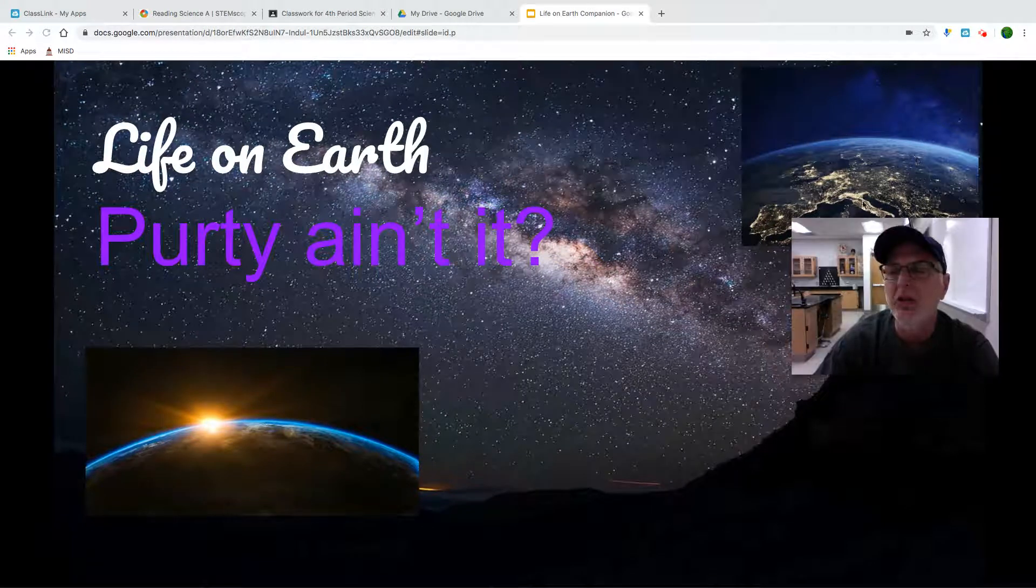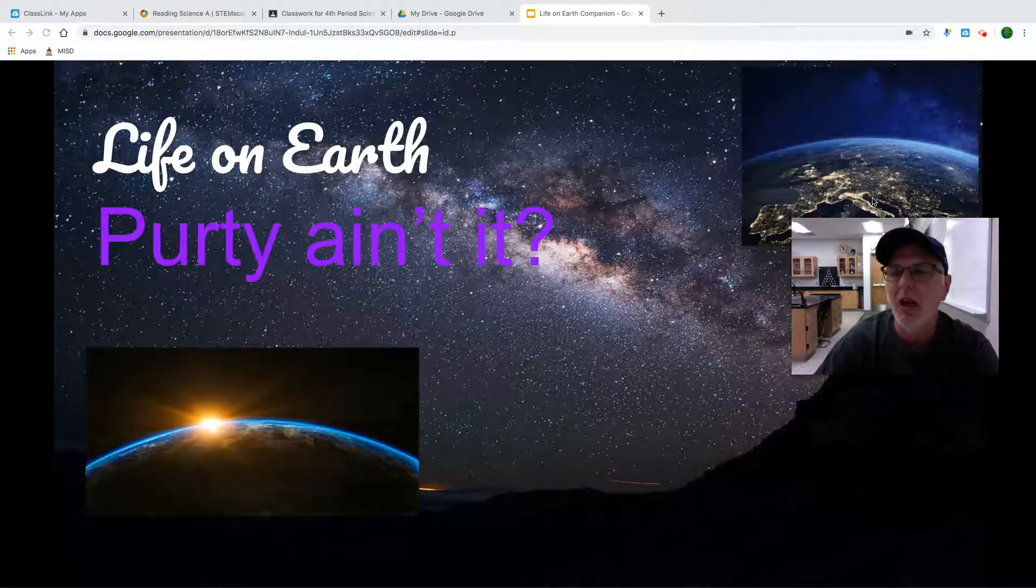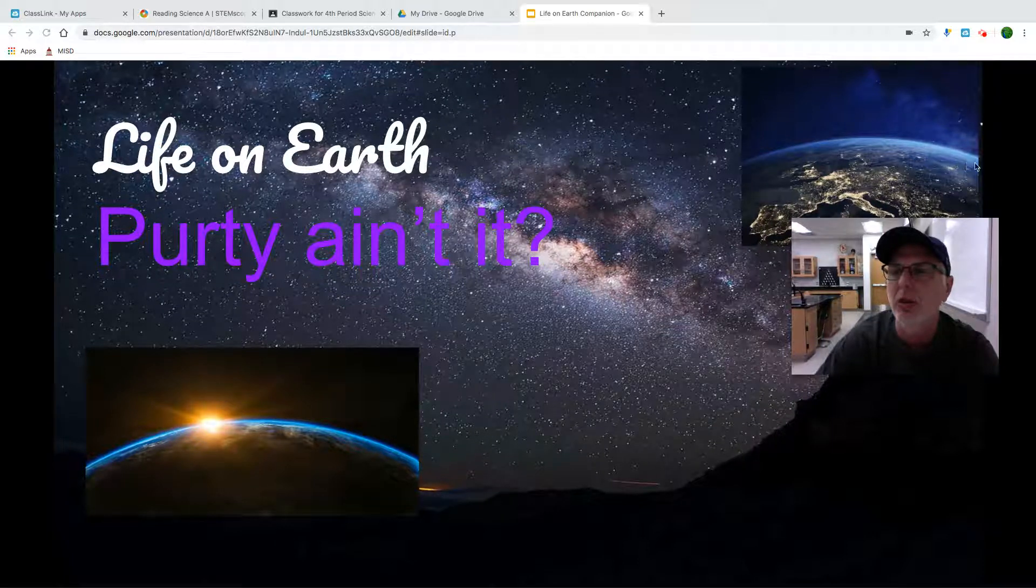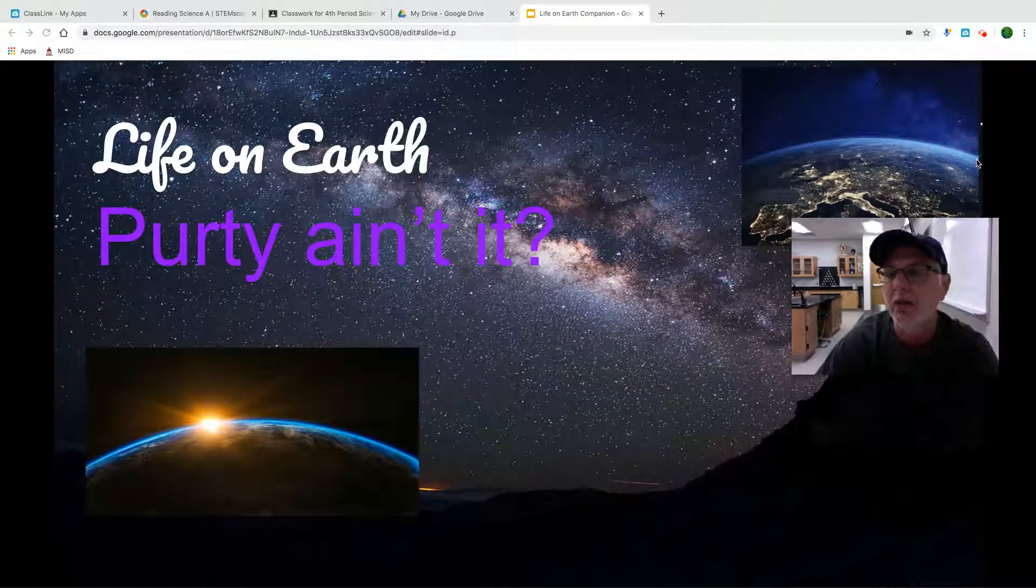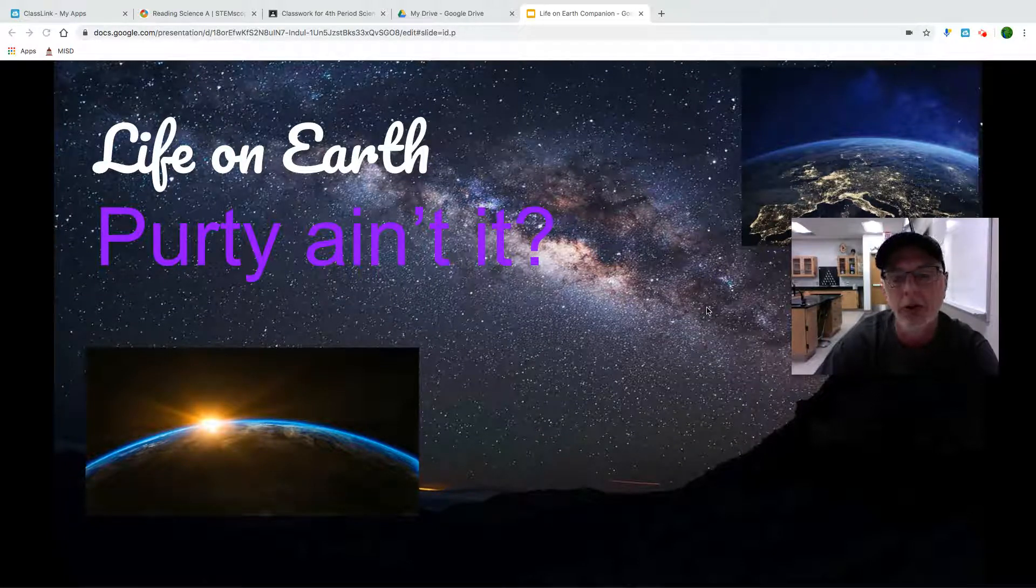What we can see here is these are city lights at night, taken from a satellite. We also see the curvature of the Earth, which once again proves that the Earth is a sphere. It is not flat. I know you hear that from people, but I'm sorry, they're wrong.